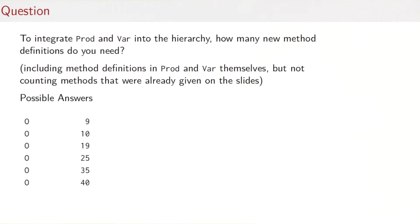So a question to you. If we wanted to do that for Product and Var, how many new method definitions would we need? Here I want you to count the method definitions in Product and Var themselves, but also any new accessor and classification methods that we have to retrofit to the existing classes, to expression and sum and num. Possible answers would be 9 or 10, 19 or maybe 25 or even 35 or 40.